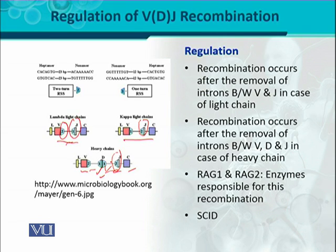SCID stands for Severe Combined Immuno Deficiency. Individuals who have RAG1 and RAG2 deficiencies will have immunodeficiency, and this condition is called Severe Combined Immunodeficiency. Ultimately, those individuals are prone to getting regular infections because they lack proper antibodies and immunoglobulins.